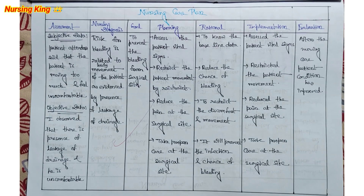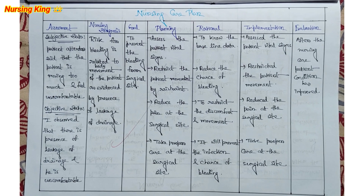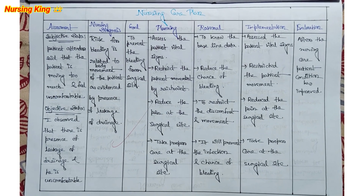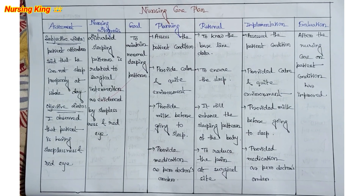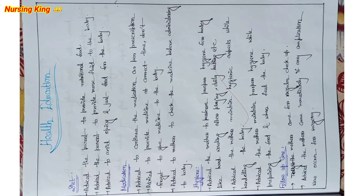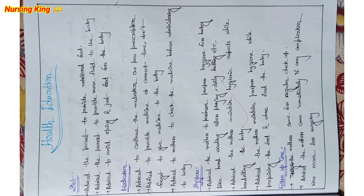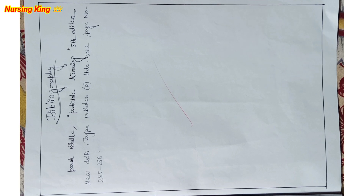Based on the chief complaints, you write the nursing diagnosis, and depending on the nursing diagnosis you write one nursing care plan each — two preoperative and two postoperative nursing care plans. After that, health education, then conclusion, and finally bibliography.